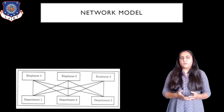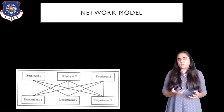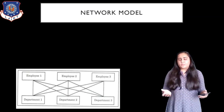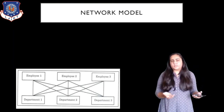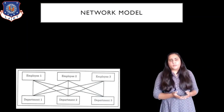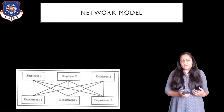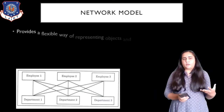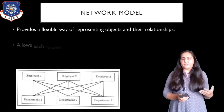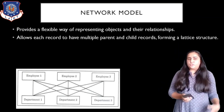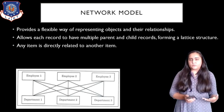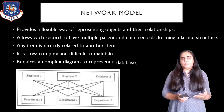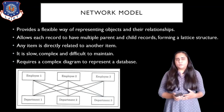Same with employee 2 and employee 3. It's very simple to create but it's complex when you have several objects. If you were running a department with 15 departments and 100 employees, you'd go mad creating all the lines everywhere. So this model is not used in practice but it is still studied, and these are some of its features. The first feature is that it provides a flexible way of representing objects and relations. Each record can have multiple parents and child records, so it's a lattice structure. Any item can be directly related to another item, and it's slow, complex, and difficult to maintain. It also requires a complex diagram to represent a database.